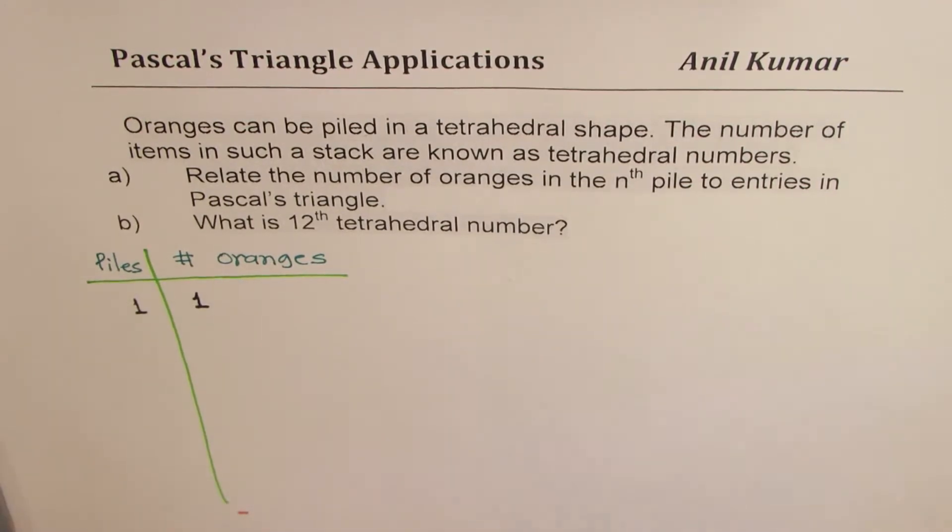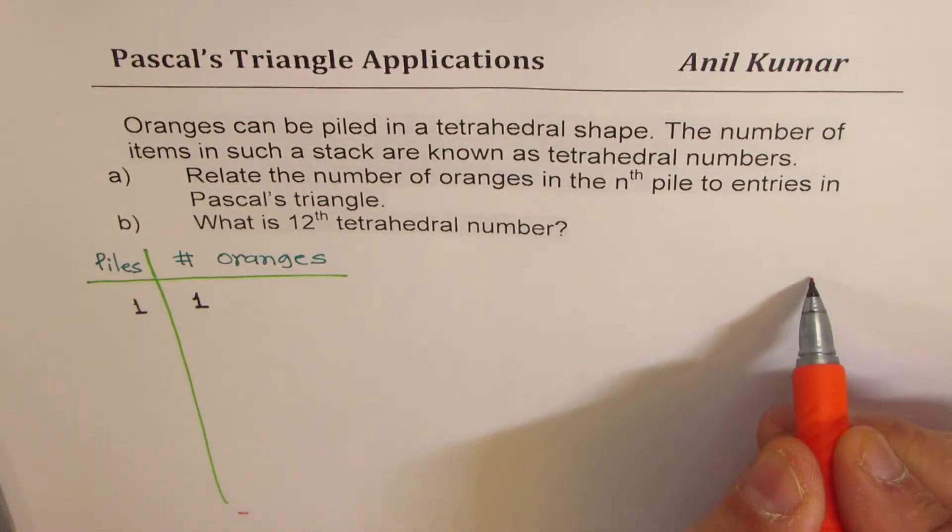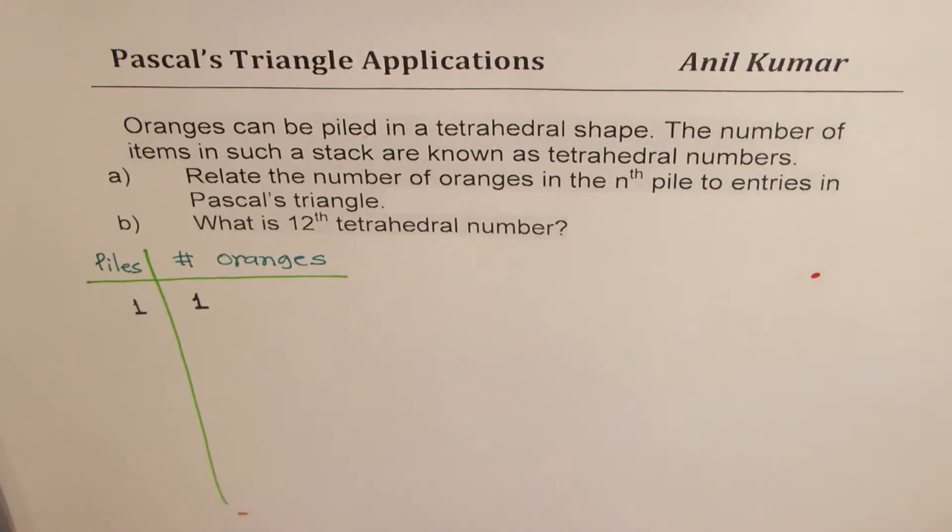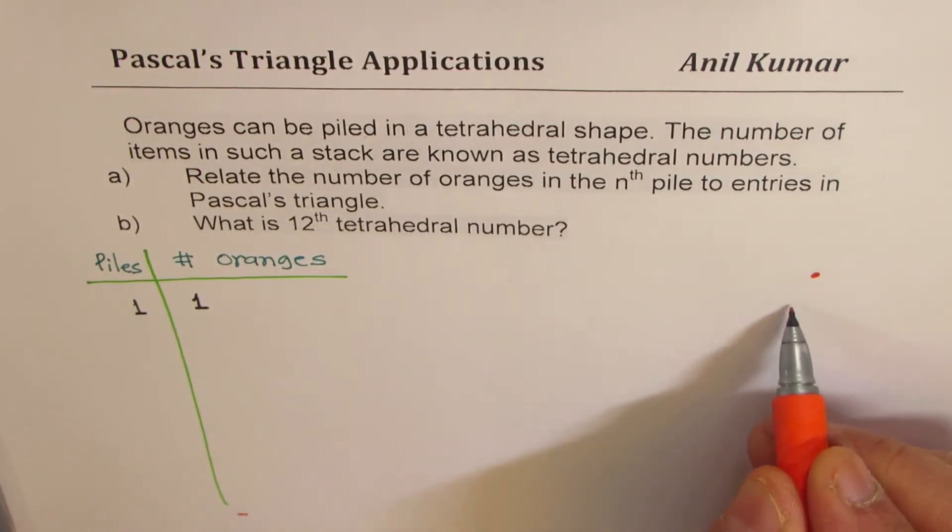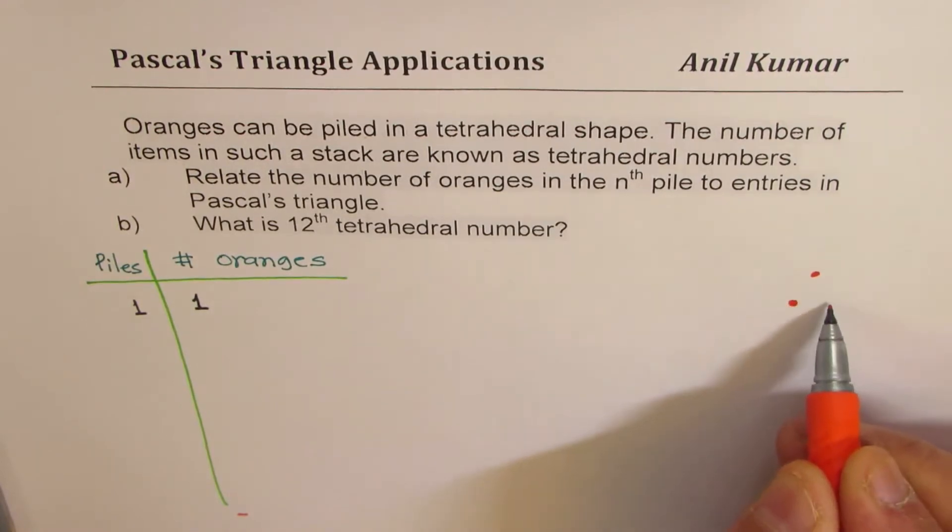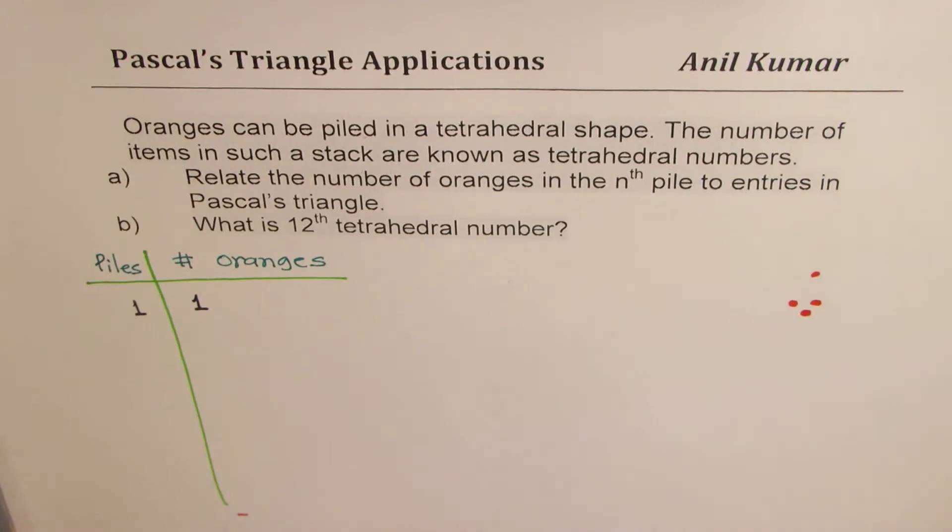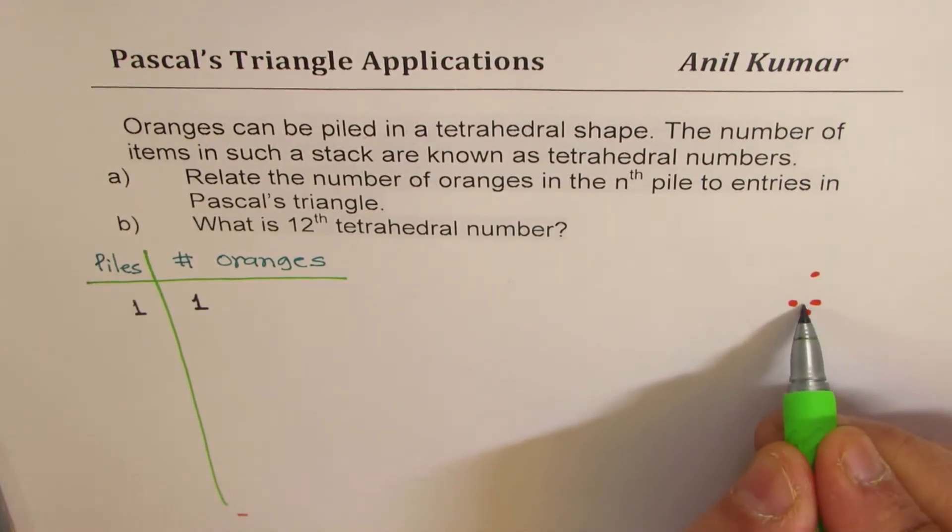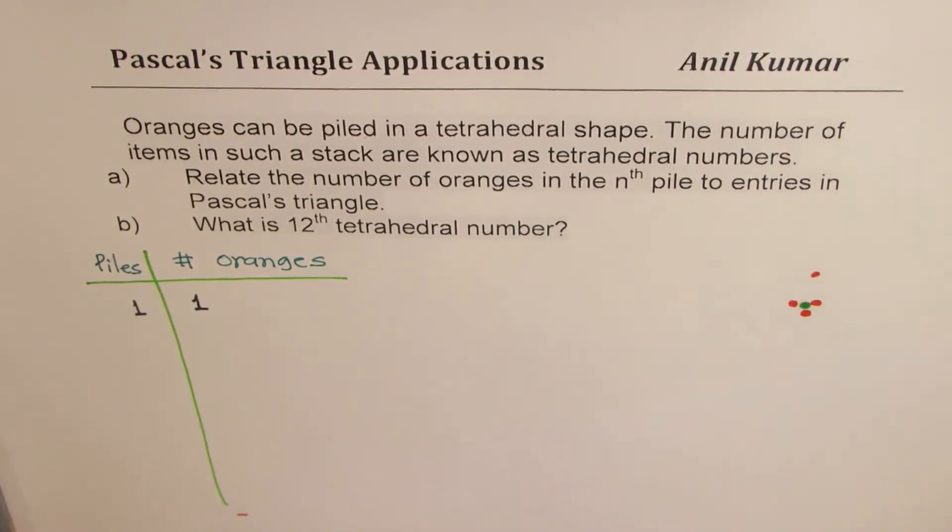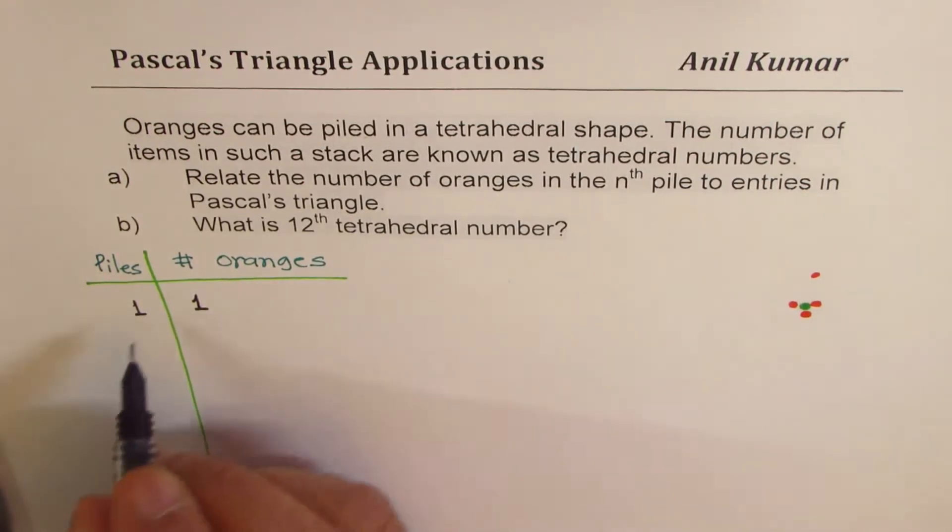So it's kind of like this. We had just one orange to begin with. In the second one, how many did we have? We could place three in the bottom and then put one on top of them,